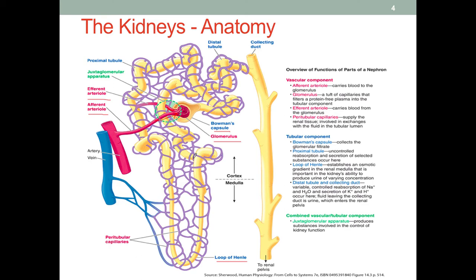Over this process, as the filtrate flows through the convoluted tubule, a lot of useful things are reabsorbed. After being reabsorbed, everything goes back into the vein and back to the blood circulation. Certain things that are not reabsorbed will eventually be disposed of in the urine, making it to the collecting duct, down to the renal pelvis, through the ureter to the urinary bladder for temporary storage. This is how we get rid of certain metabolic wastes.